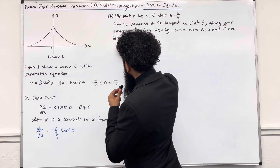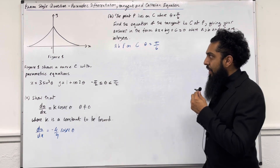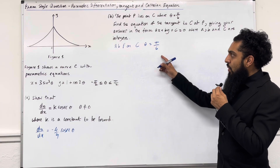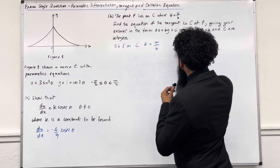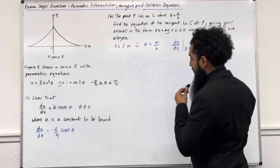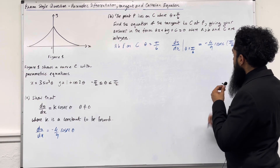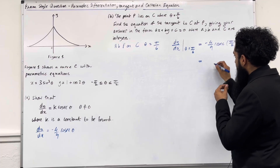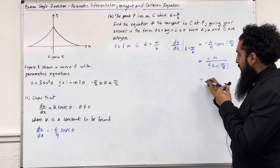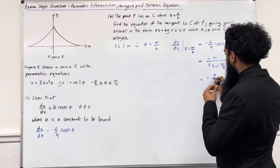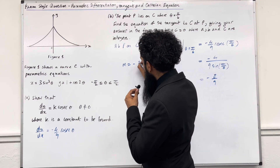We are told that at P on curve C, theta is equal to pi over 6. To work out the gradient of the tangent to C at P, we substitute theta equal pi over 6 into the gradient function. We need dy over dx when theta equals pi over 6, which gives minus 4 over 9 cosec of pi over 6, written as minus 4 over 9 sine pi over 6. Putting this into the calculator gives minus 8 over 9. So the gradient of the tangent M is equal to minus 8 over 9.